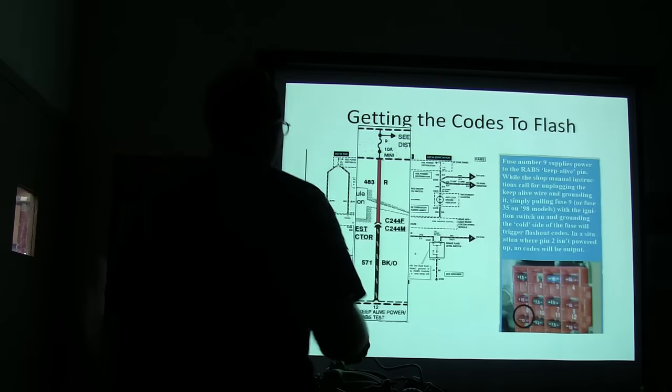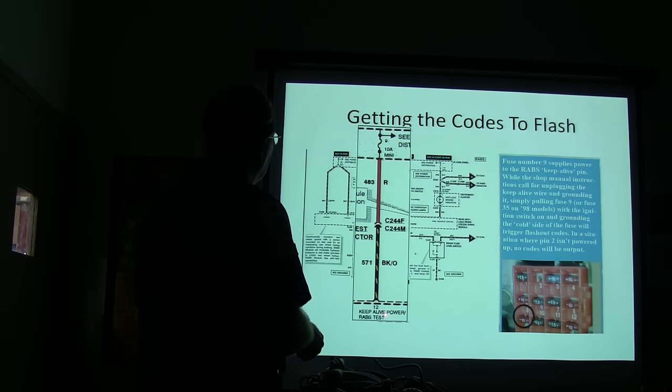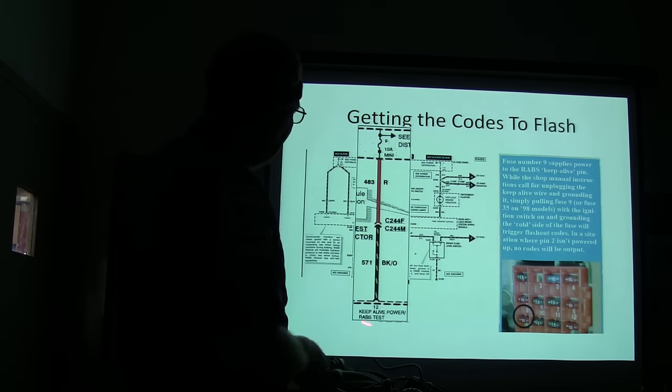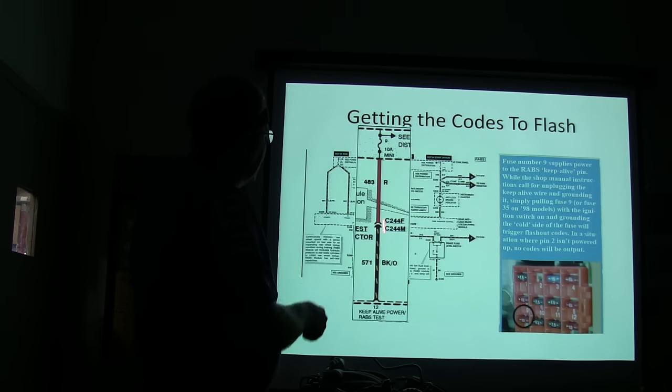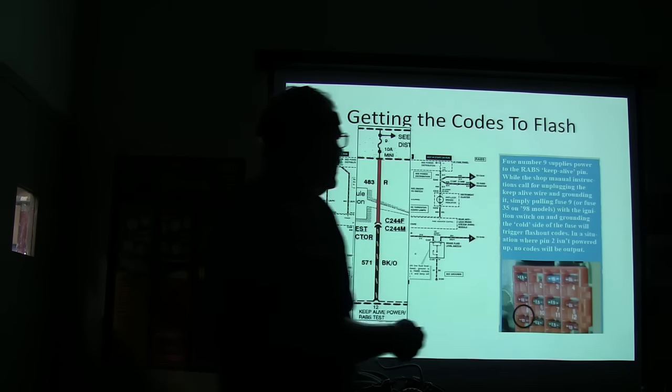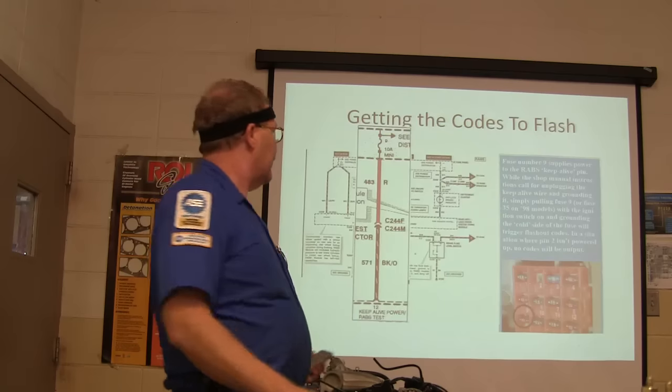There is a sheet on this about flashing the codes on the ranger. Some of you, I think, may have done it, but I'm not sure. That gives you the, that's your keep-alive power around the chest. Now here's the other thing. This keeps the codes from getting lost. Also, if you unplug this with the key off, you're going to lose whatever code was stored. If it's an intermittent code, that's really aggravating.